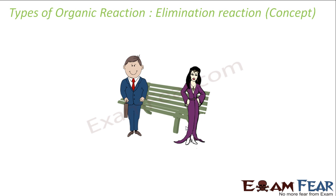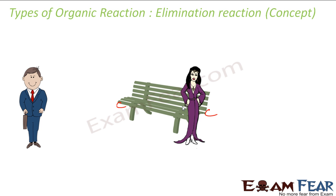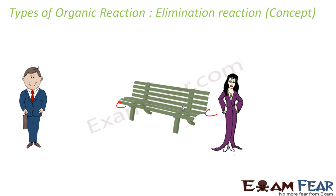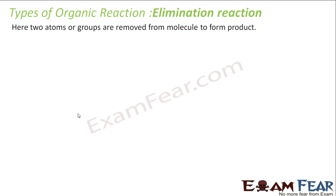Let's see once again. There's a bond and atoms attached to two positional carbons. This guy leaves, the girl is lonely and also leaves, then the log comes and a double bond is formed. Nobody can come here unless they have power to remove the log. That's a typical real-world scenario of elimination reaction — two atoms or groups of atoms are removed from a molecule to form products.